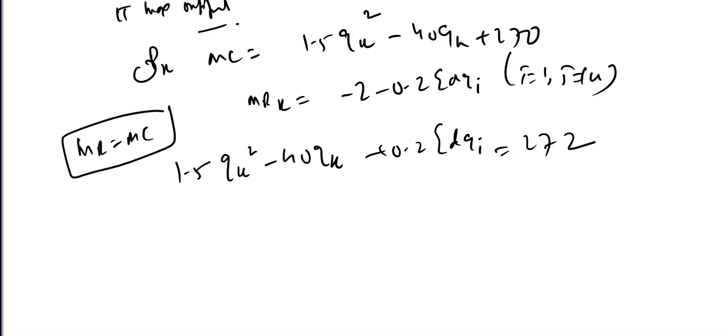So 1.5 Q_k square minus 40 Q_k plus 0.2 dQ_i, i equal to 272. Since there are 11 firms, the sum of quantity produced by all firms in the market will be sum Q_i equal to 11 Q_k. Replace this: 1.5 Q_k square minus 40 Q_k plus 0.2 times 11 Q_k equal to 272.